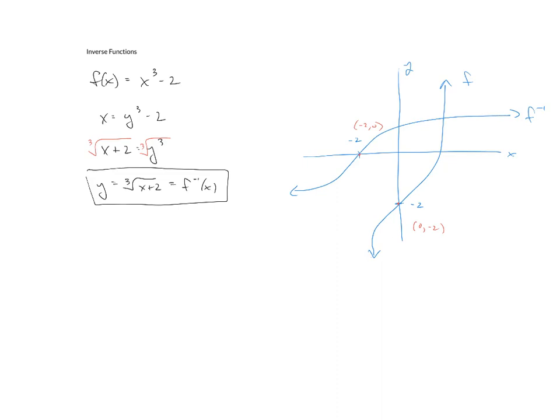Which leads us now to the idea of symmetry. A function and its inverse absolutely have symmetry. In fact, the symmetry between a function and its inverse will always be across the line y equals x. So if you graph a function and its inverse, and it's not symmetric about the line y = x, then something went wrong and we would need to go back and address it.